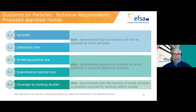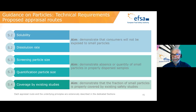The first guidance on particle technical requirements offers different appraisal routes. Applicants must demonstrate that the conventional risk assessment is sufficient: route one covers solubility and dissolution rate to demonstrate consumers could not be exposed to small particles; route two covers particle size distribution to demonstrate particles are large, not at nanoscale; route three allows applicants to demonstrate that even if small particles exist, this fraction is well covered by existing safety studies. These appraisal routes are independent — fulfilling criteria for one should be sufficient.